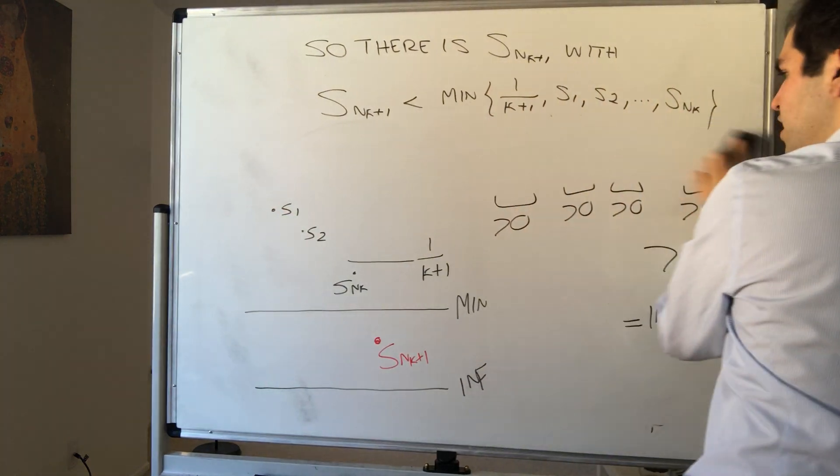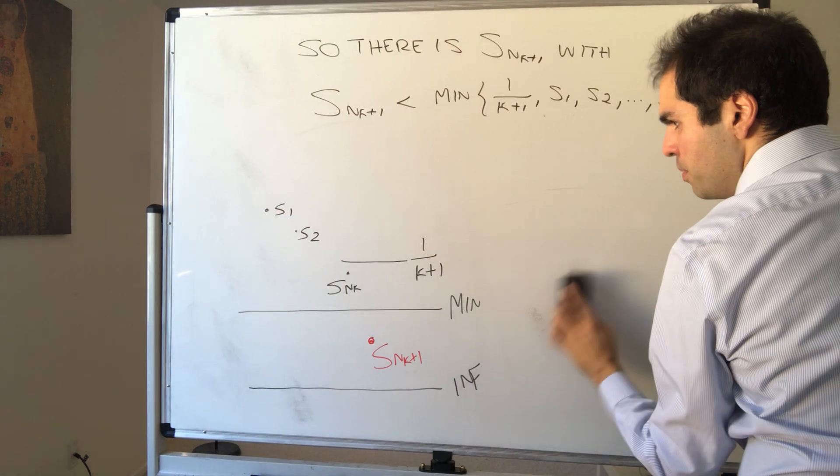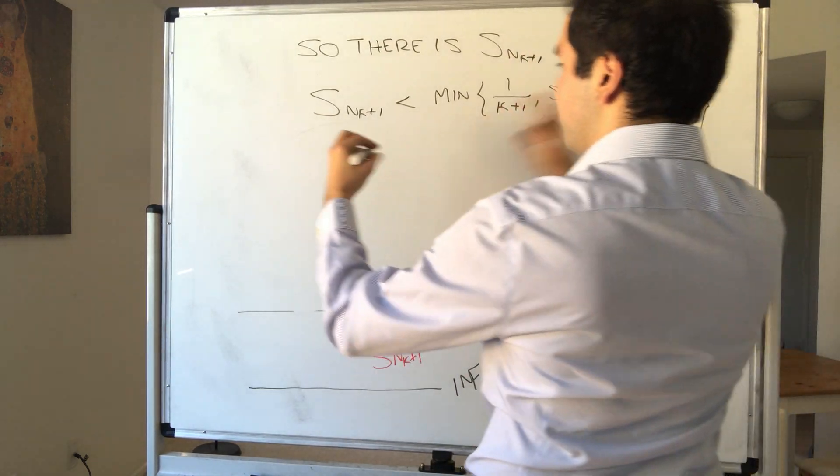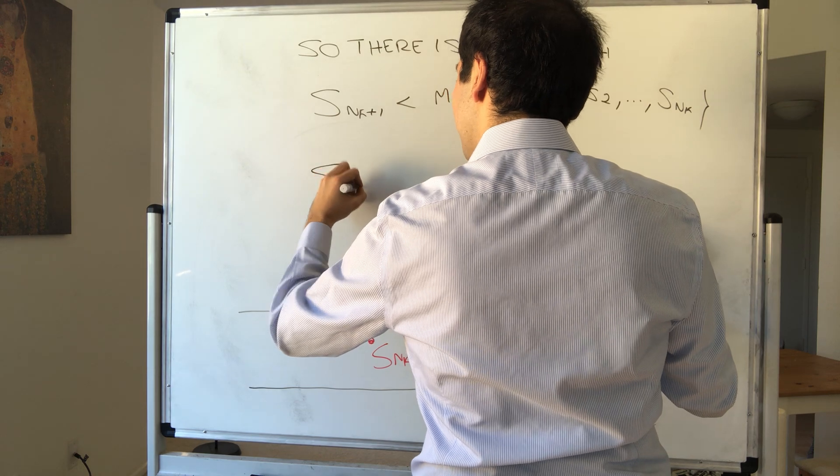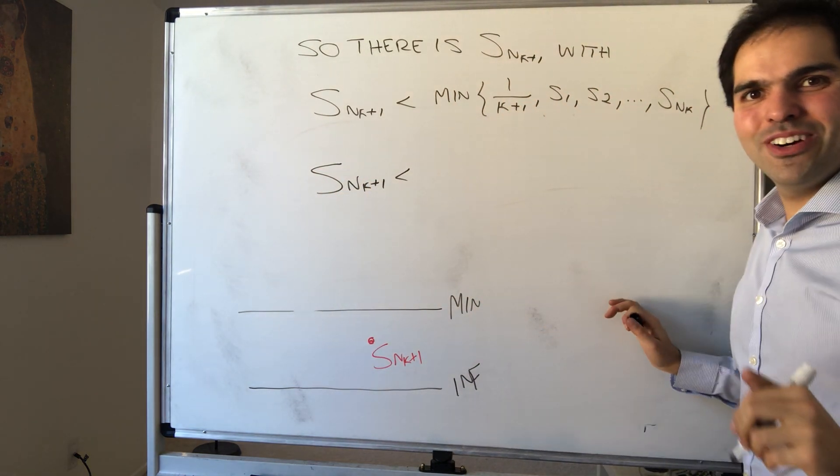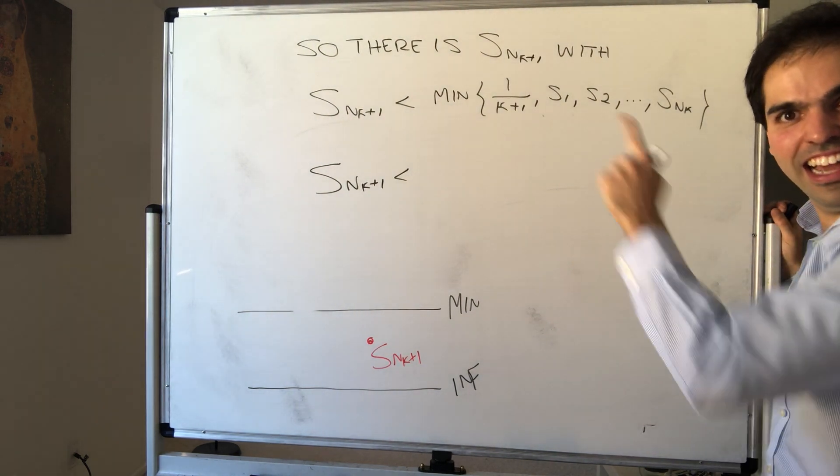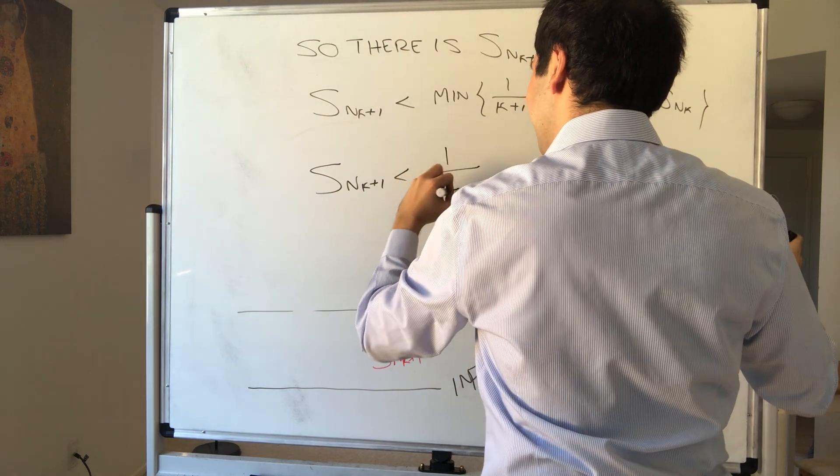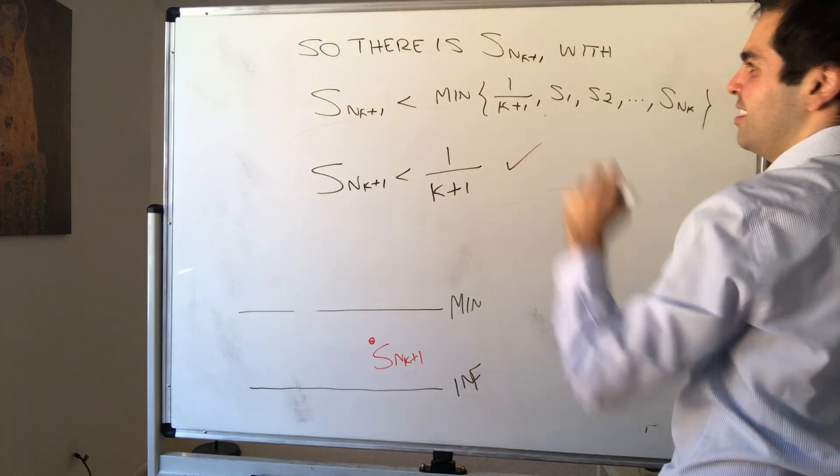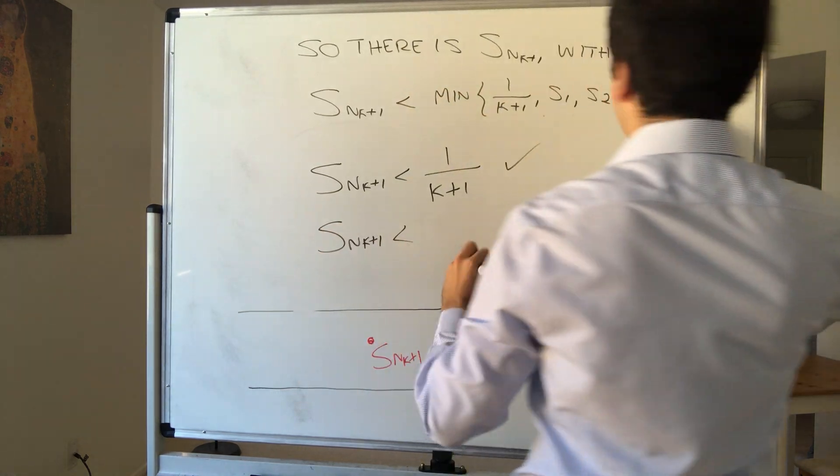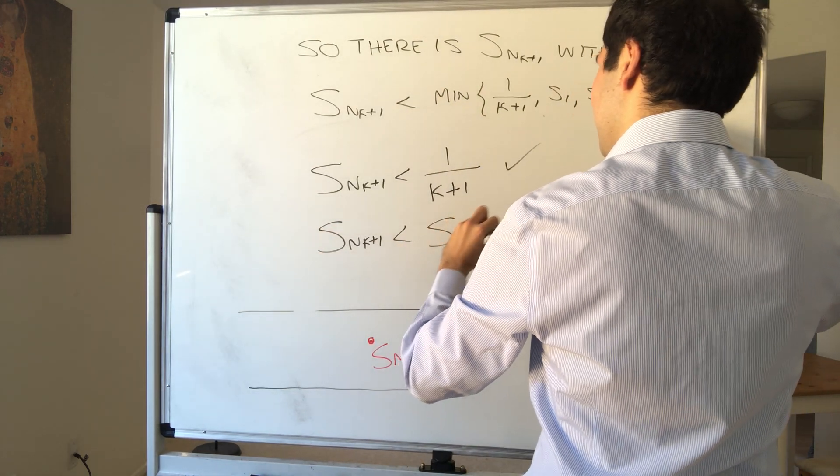And then we are pretty much done, because what do we have? Well, we know, because it's smaller than the smallest of them all. It's funny, because in Pokemon, you want to be the greatest of them all. Here, in analysis, you want to be the smallest of them all. So we get, this is less than 1 over k plus 1. Done. We have Snk plus 1 is less than Snk. Done. So it's decreasing.